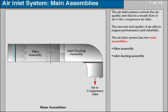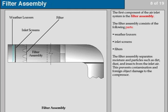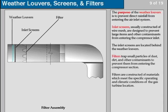The air inlet system has two main assemblies: the filter assembly and the inlet ducting assembly. The first component of the air inlet system is the filter assembly, which consists of the following parts: inlet screens, weather louvers, and filters. The filter assembly separates moisture and particles such as light dust and insects from the inlet air, preventing contamination and foreign object damage to the compressor. The purpose of the weather louvers is to prevent direct rainfall from entering the air inlet system.